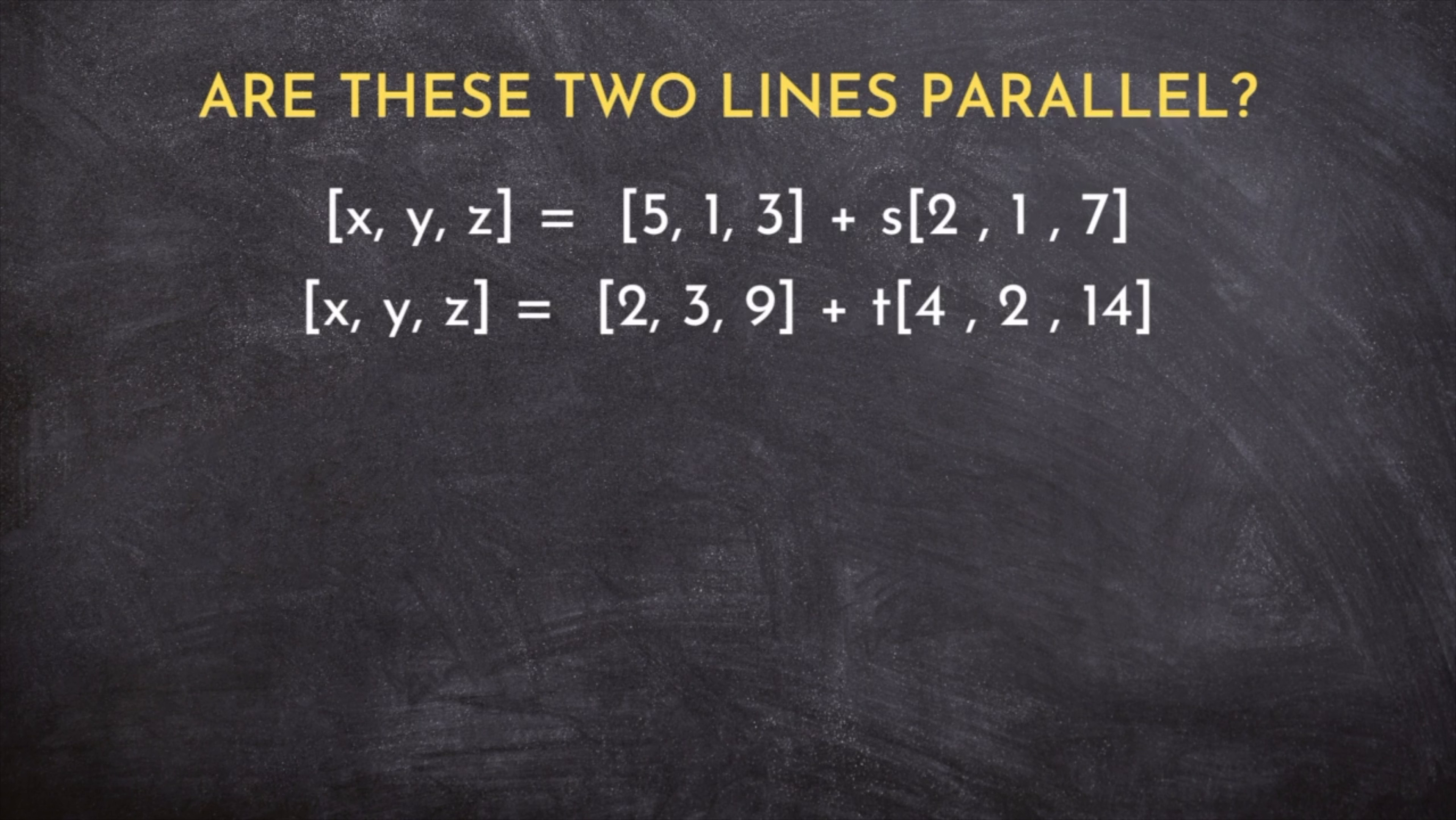The direction vectors can be found by looking right here. It's the vector next to the parameter in the vector equation. If these direction vectors are multiples of one another, we've got parallel lines.